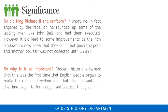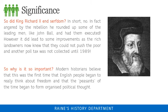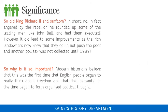So what is the significance of the Peasants' Revolt? Did King Richard II end serfdom? In short, no. Angered by the rebellion, he rounded up some of the leading men, like John Ball, and had them executed. However, it did lead to some improvements — rich landowners could no longer push the poor around, and another poll tax would not be collected until the late 20th century. Its importance lies in the fact that it was the first time that English people began to really think about freedom, and that the peasants began to form organised political thought.